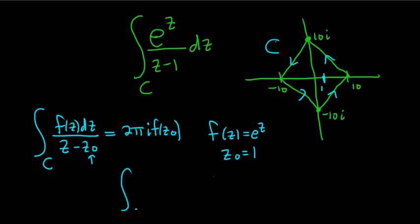So we have the contour integral of e^z over z minus 1 dz. That should be equal to 2πi times f of z_0. Well, z_0 is 1, so it's f(1).